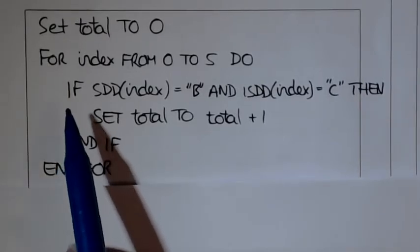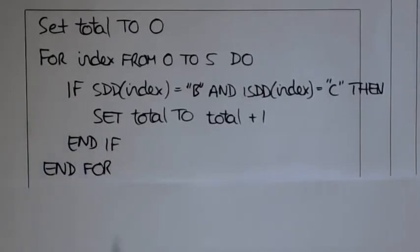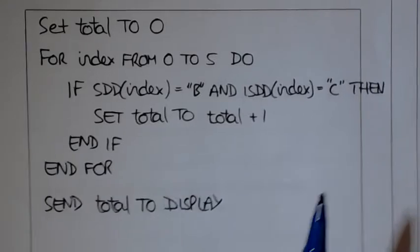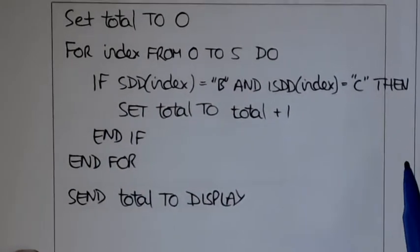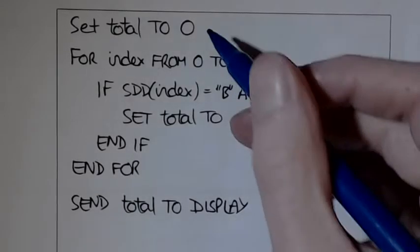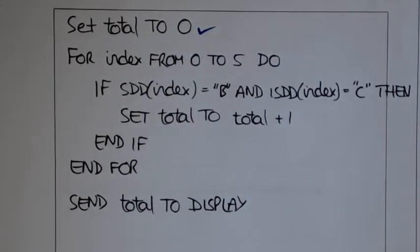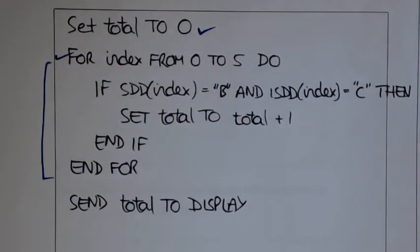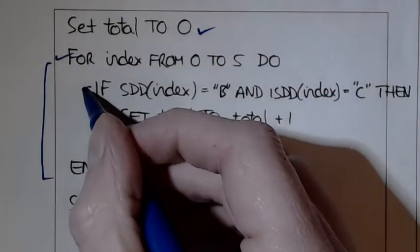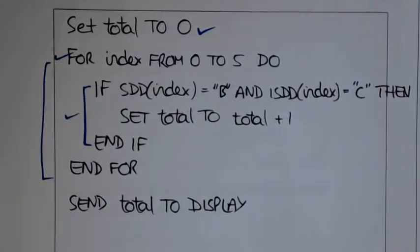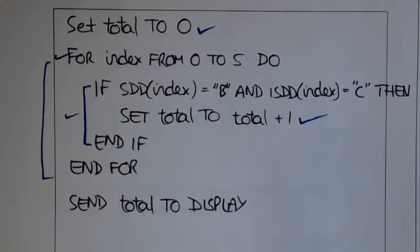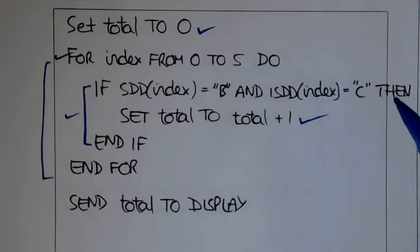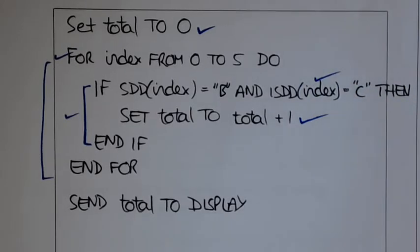A good idea when you're writing it down is to indent it so you actually know if you've started and stopped your construct. Just to show you where you get the marks from: you get one for doing the total, you get another for doing the fixed loop from start to end, you get another one for the fixed if from start to end, you get another one for totaling it, and you'd also get another one for getting the condition right.